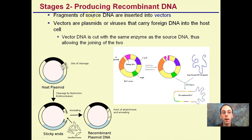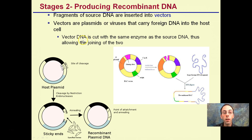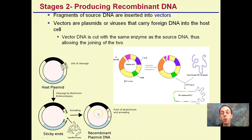Stage two is producing recombinant DNA. Vectors — an important term — refer to plasmids or viruses that carry foreign DNA into the host cell. The site of cleavage is where DNA is separated by restriction enzymes. The vector DNA is cut with the same enzyme as the source DNA, thus allowing the two to join. We need to cut both the host plasmid to form sticky ends and the DNA containing the gene of interest, using the same restriction enzyme so they bind together and form a clean bond.